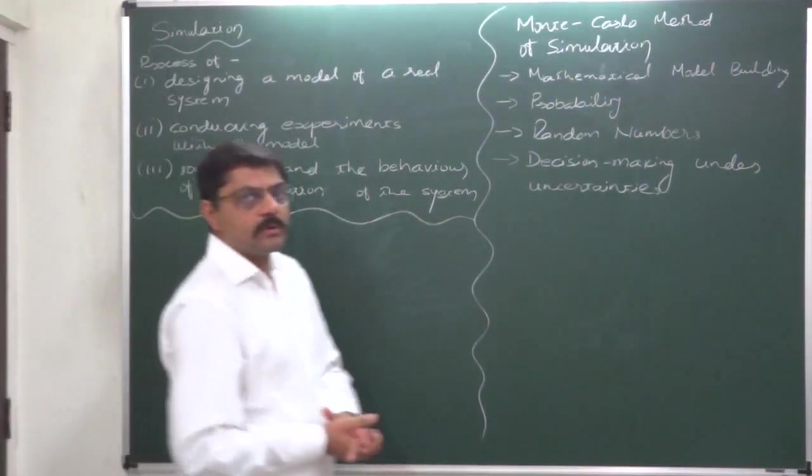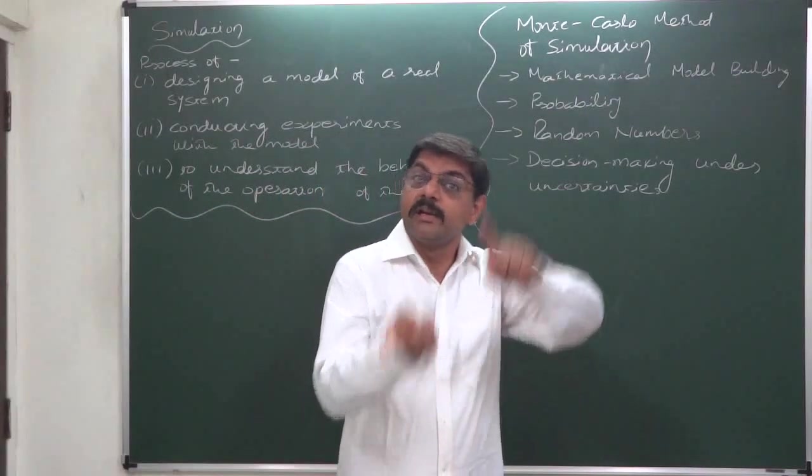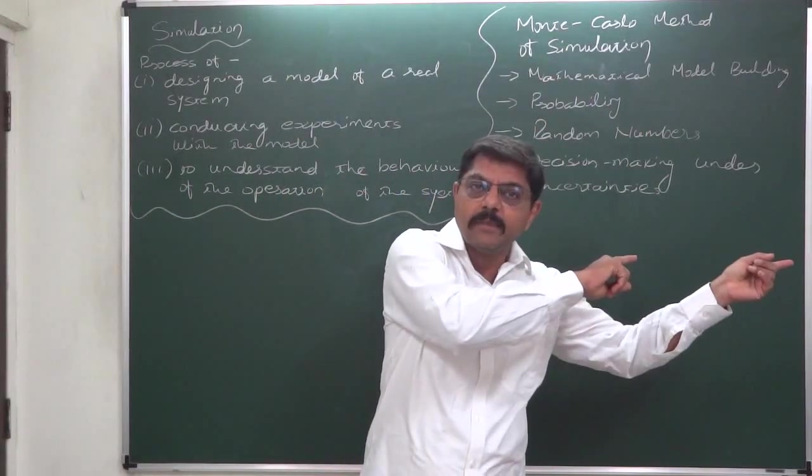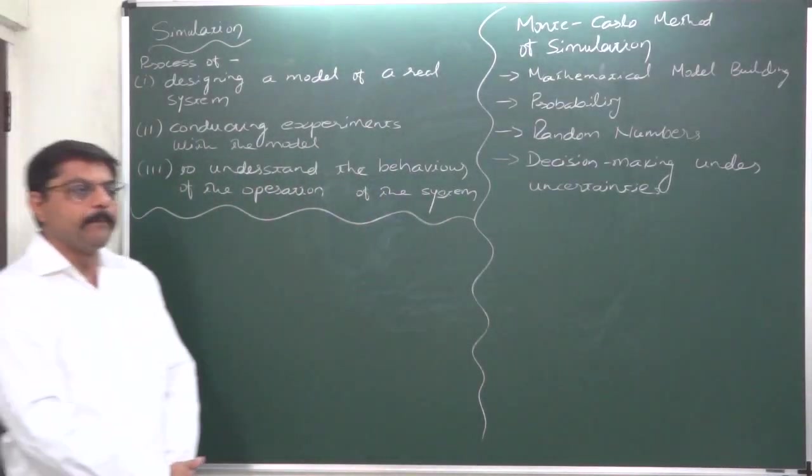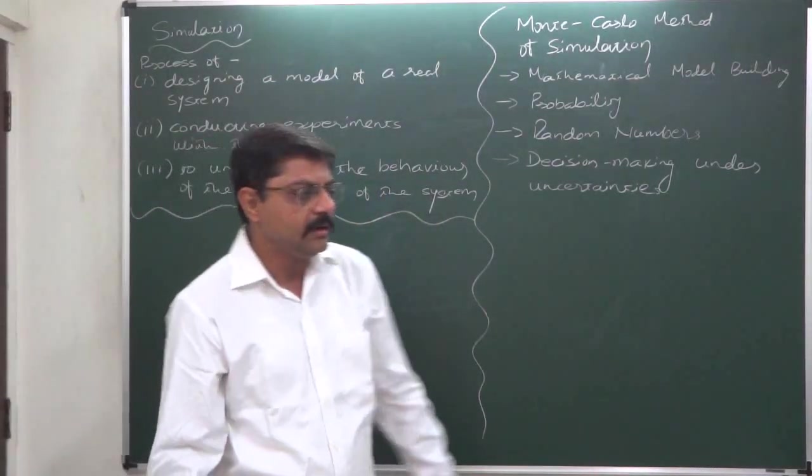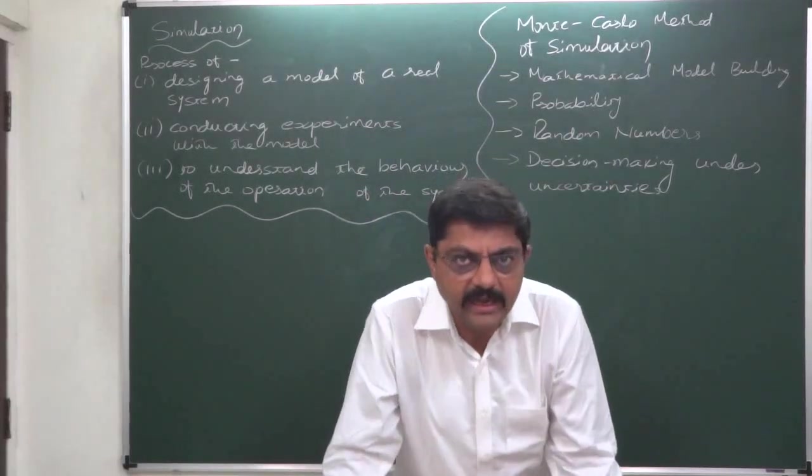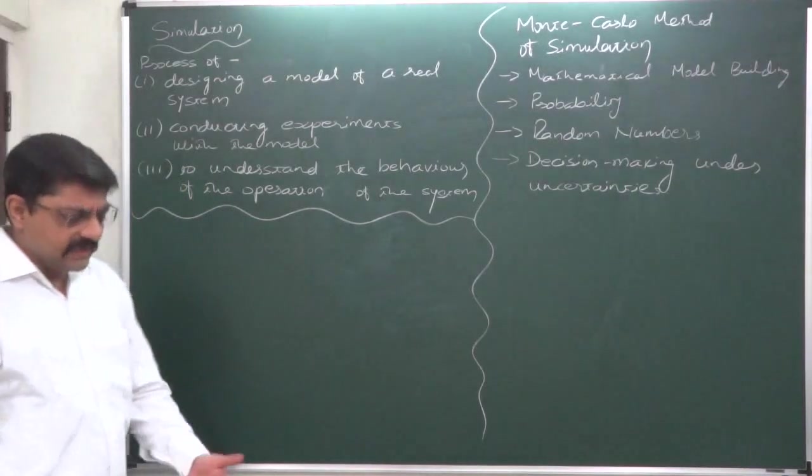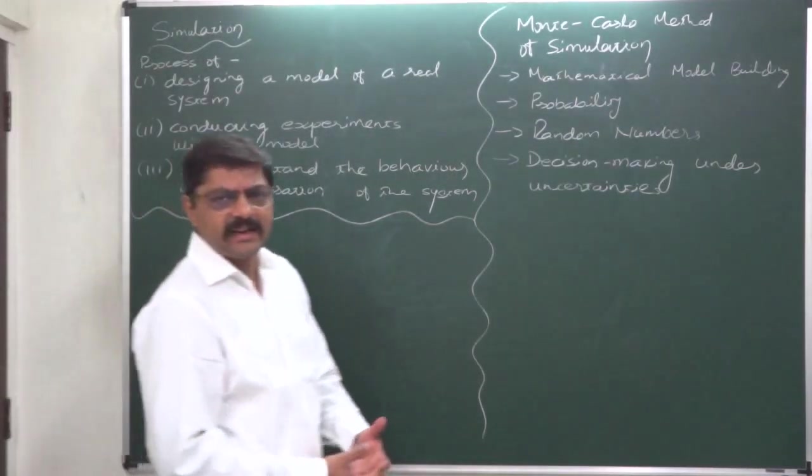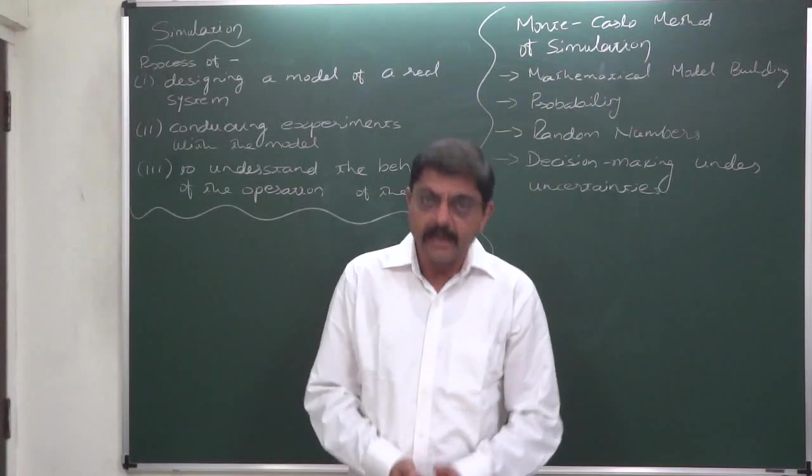Then, getting the random numbers relevant to the decision variable, and then understanding the behavior of the decision variable under the random occurring of the phenomena. This is actually a trial and error method based on random numbers.